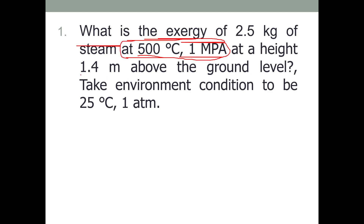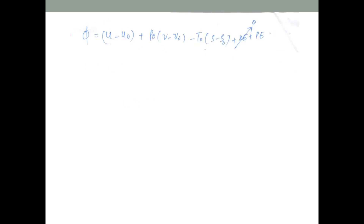We are considering potential energy since the steam is 1.4 meters above ground level, so we include that in the basic equation. There is no information about velocity, so we ignore the kinetic energy term. Recalling the fundamental equation: φ = (u − u₀) + p₀(v − v₀) − T₀(s − s₀). We ignore kinetic energy and the flow work sigma term.